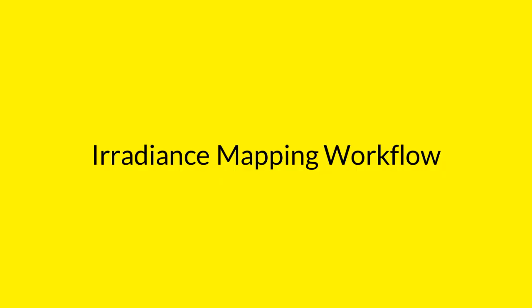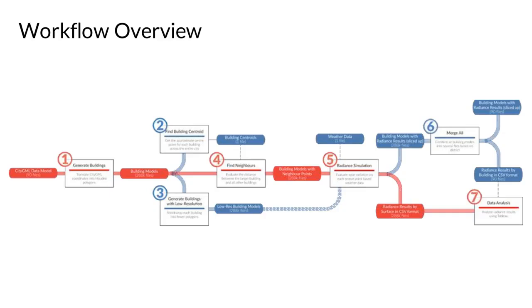The proposed workflow consists of seven steps. A key strategy of the proposed workflow is the decomposition of the city model into smaller building models for parallel simulation. The Houdini PDG was used to automate the process of splitting up the model and running R-Trace simulations in parallel.